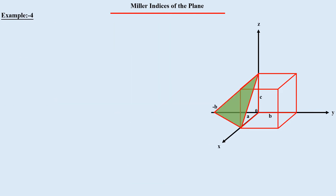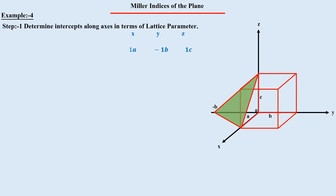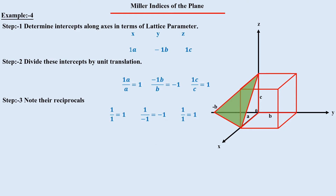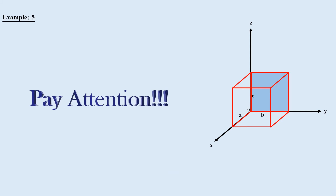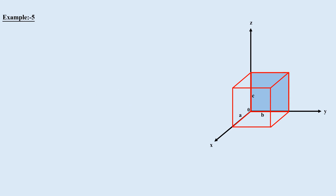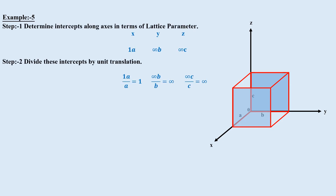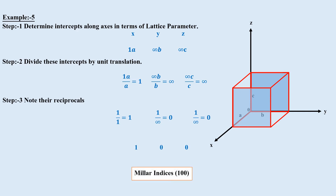In the fourth example, a plane cuts the x-axis at a, the z-axis at c, and the y-axis at minus b. The resulting hkl values are 1, −1, and 1. As discussed in the previous video, a negative number in Miller indices is written with a bar above it. Therefore, the Miller indices of this plane are (1 1̄ 1). If any plane passes through the origin, we consider a parallel plane instead, since all parallel planes share the same Miller indices. We then calculate the Miller indices of that parallel plane, which also serve as the Miller indices of the original plane.